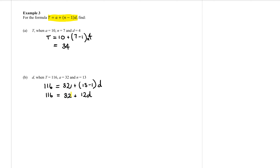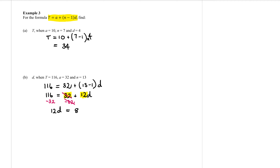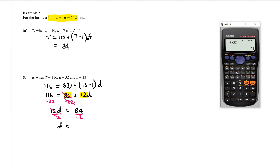Now I have an equation with two numbers to move away from d. The first one is the 32 — it's positive, so I subtract 32. We switch sides: 12d goes to the left, and 116 minus 32 which is 84 goes on the right. To get rid of the 12, I divide by 12. Cancel that off. D is by itself and 84 divided by 12 is 7.